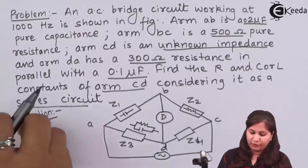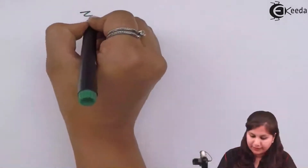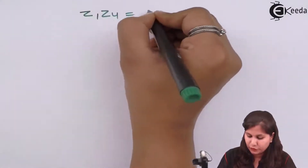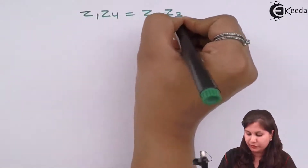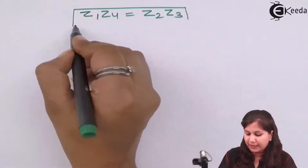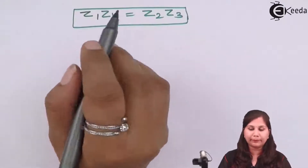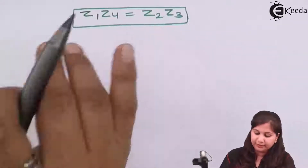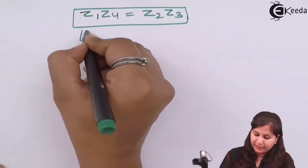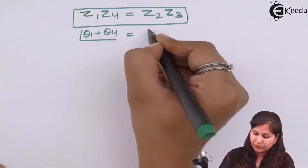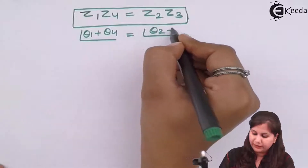For a general AC bridge, the balance equation is Z1·Z4 = Z2·Z3. Using this balance equation we are going to find out the value of the unknown impedance. Also, the sum of the phase angles: θ1 + θ4 = θ2 + θ3.